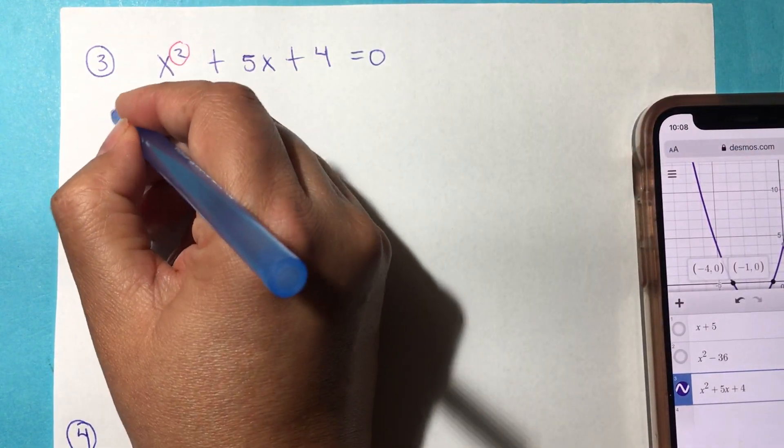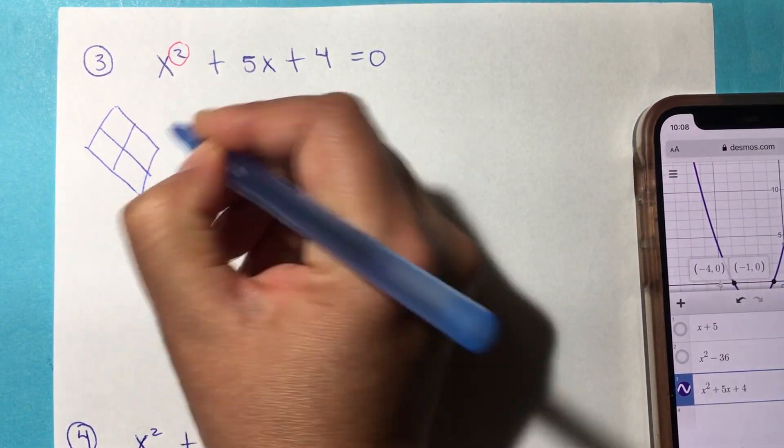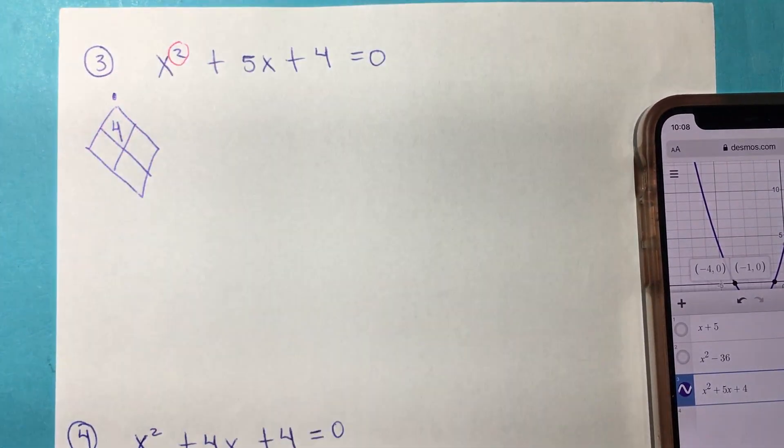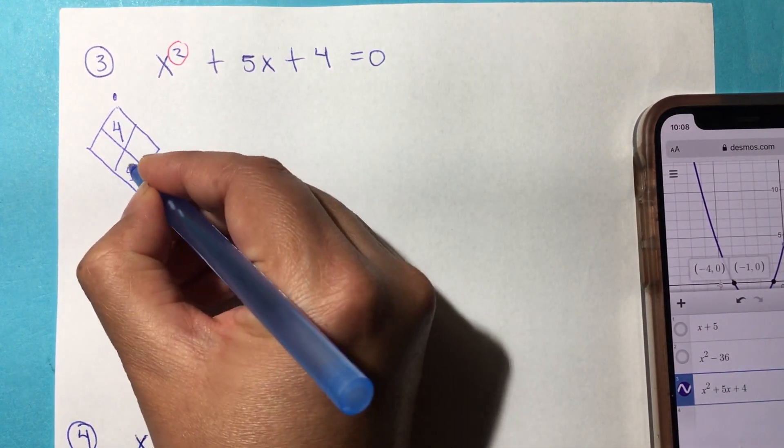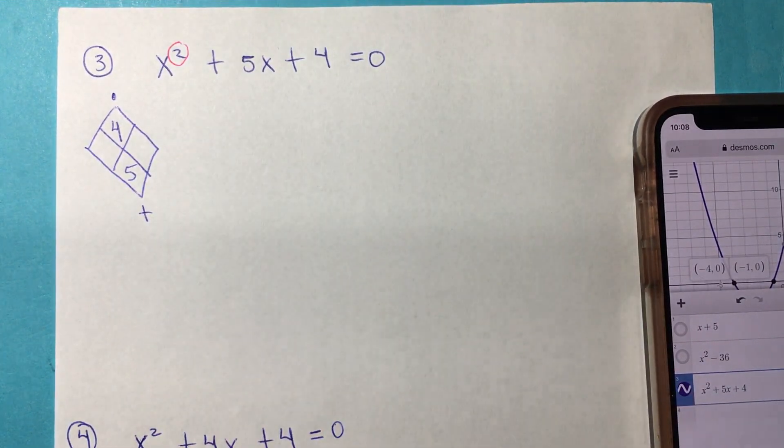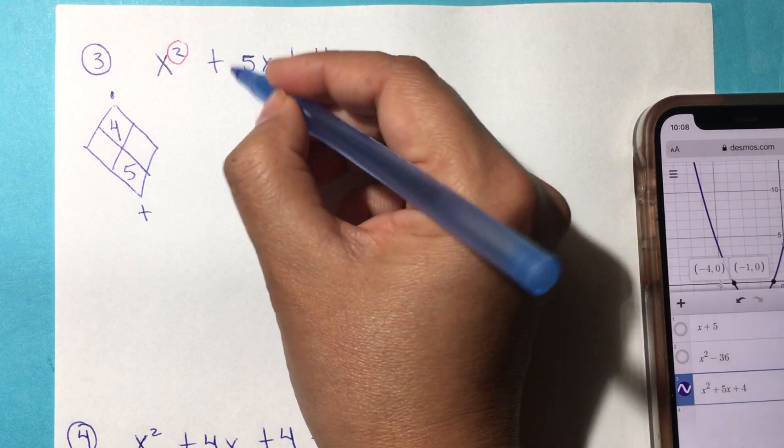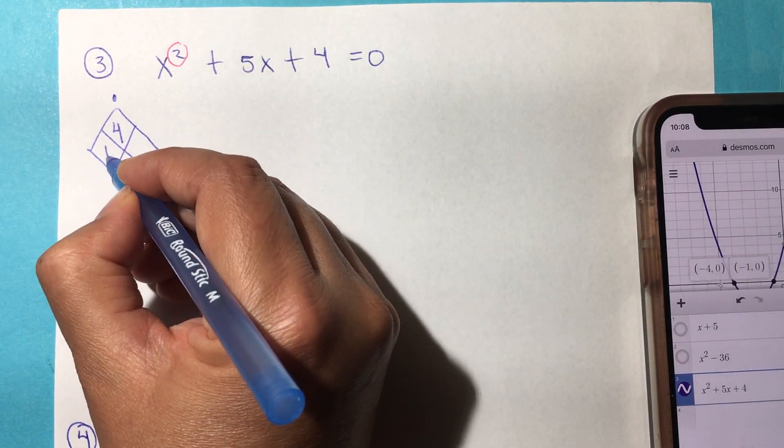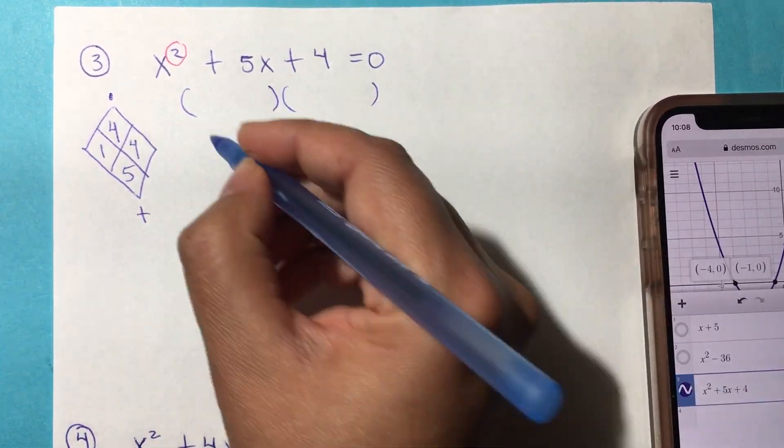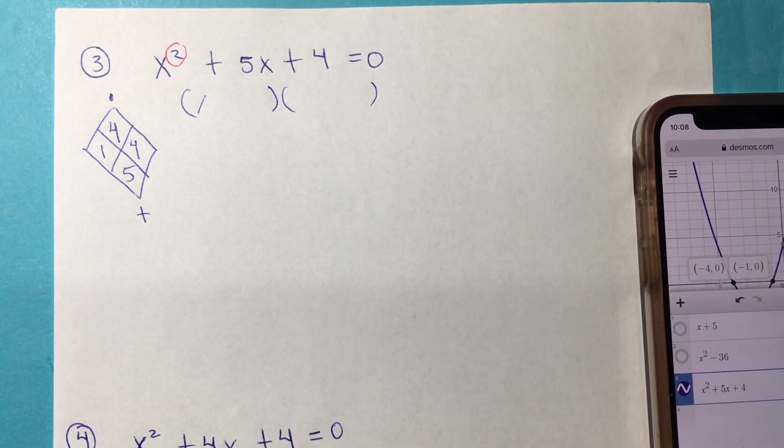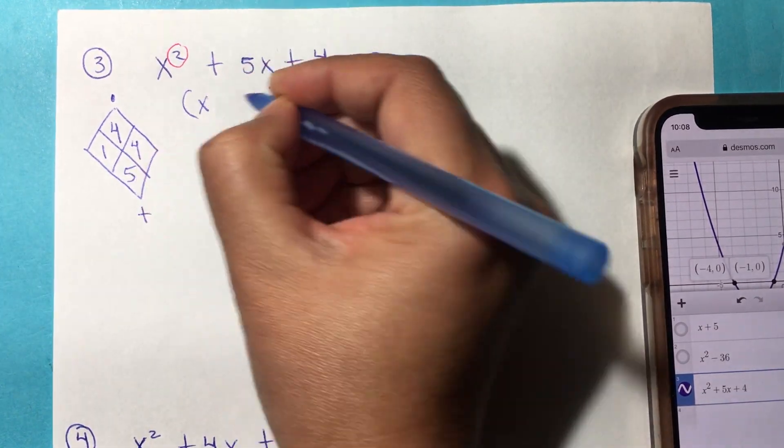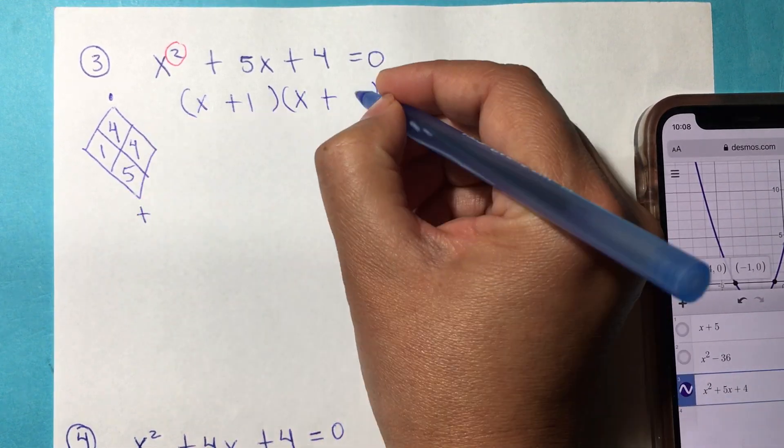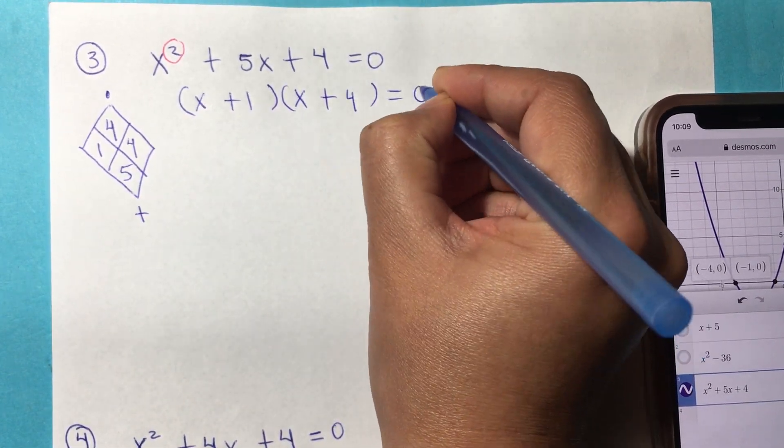You can either use the diamond. We put 4 on the top, we're looking for two factors of 4. And 5, we're looking for two numbers that added equals the middle term, which is 5. That's only when a is 1. So 1 times 4 is 4. We open our parenthesis, x + 1 and + 4, and that equals 0.